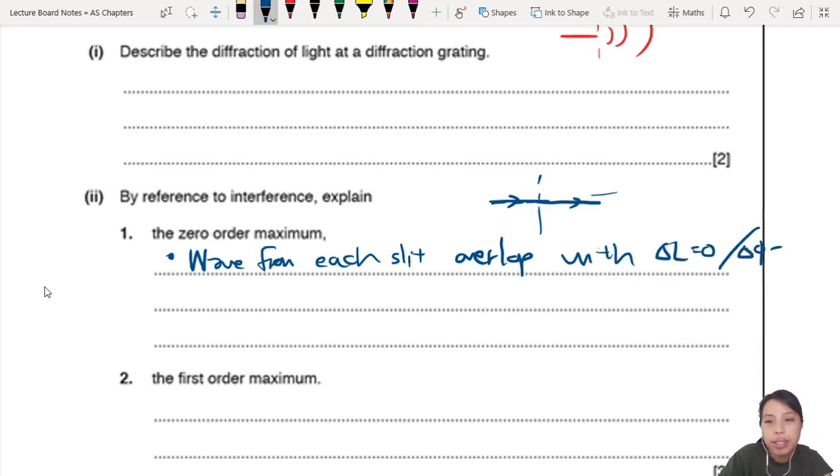Or you can say same phase difference. And because of that, you can say they are all constructive in the middle - constructive or maxima at zero order. This one is the only one marked, so it's a shorter version of the previous question.